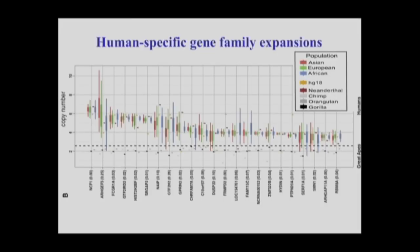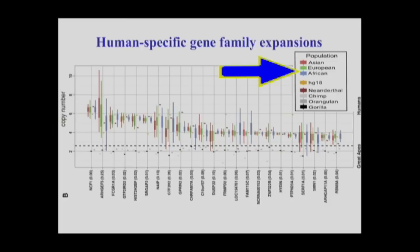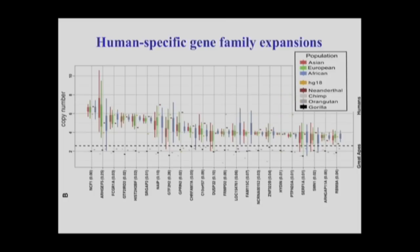I think these genes are going to be much more important in terms of understanding human function. We can now also ask specific questions about what genes are actually duplicated in the human lineage specifically, and of those, which have become fixed. Data from a paper we published last year analyzed 155 human genomes for copy number of these duplicated genes, examining Asian, European, and African populations compared to chimpanzee, orangutan, and gorilla — and also the Neanderthal. Because we've analyzed 155 human genomes, we can clearly say that specific genes are duplicated only in our lineage.